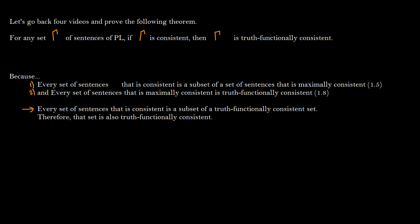So now we're going to go back four videos back to when we introduce completeness. This was the second theorem. This isn't completeness but we need to prove this. For any set gamma of sentences, if gamma is consistent then gamma is truth functionally consistent. So we have the syntax entailing or proving the semantics.